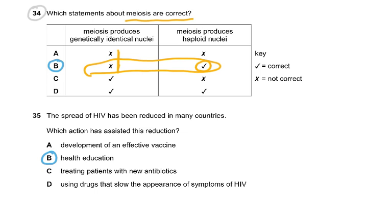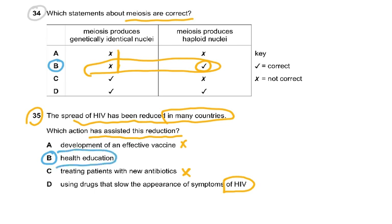Question 35. The spread of HIV has been reduced in many countries. Which action has assisted this reduction? Effective vaccine, treating patients - please remember HIV is a viral disease, you don't give antibiotics. Using drugs that slow the appearance of symptoms, if you decrease symptoms the virus still keeps reproducing inside host cells. The only answer was B, health education, which was the only possible answer that reduced it in many countries.